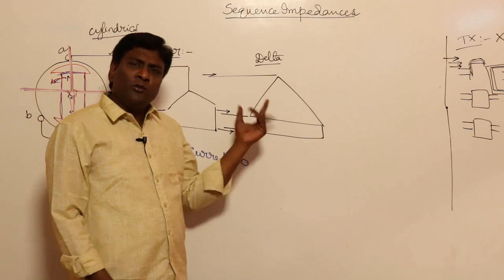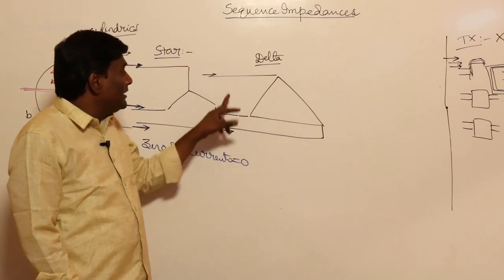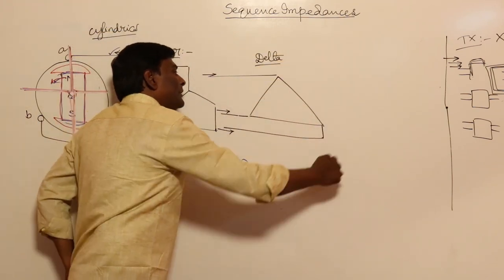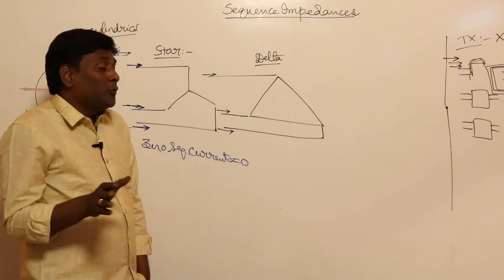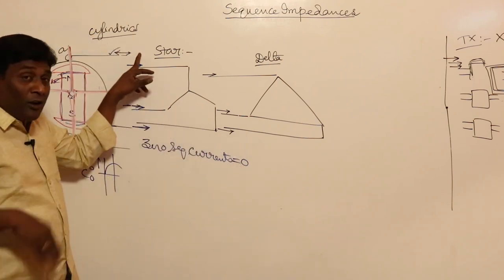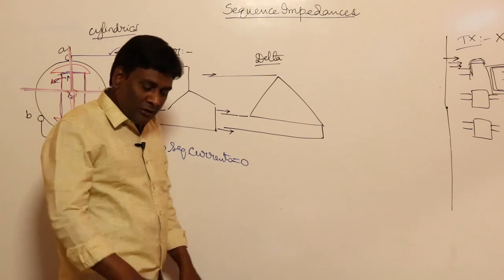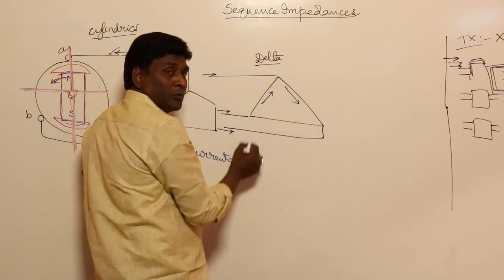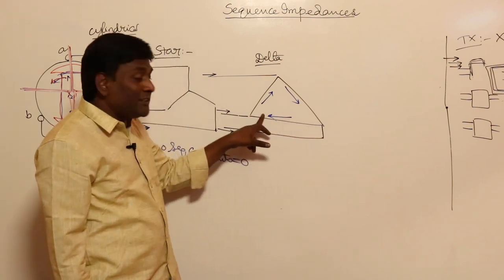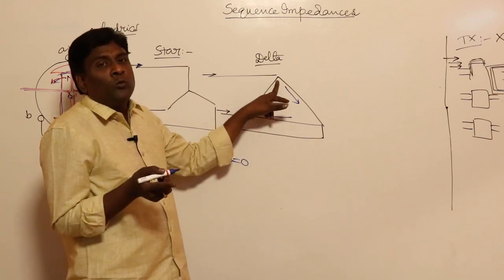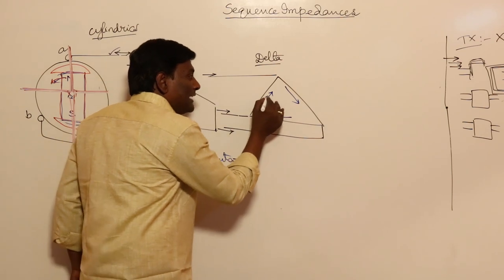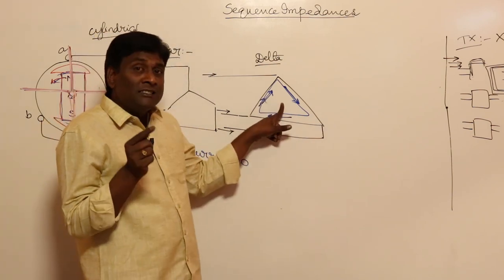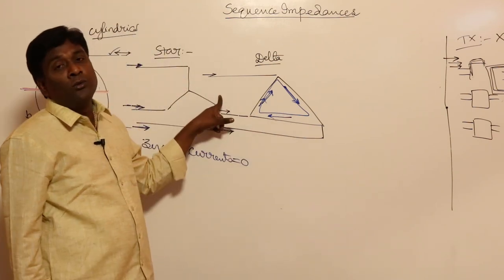For a delta connection: positive and negative sequence currents can flow in the lines as IA + IB + IC = 0. For zero sequence, the line currents cannot flow — applying KCL at the combined node, IA + IB + IC must be zero, which excludes zero sequence. However, zero sequence currents can circulate within the delta-connected phases themselves, since if one ampere flows in each phase simultaneously, they can circulate around the delta loop.